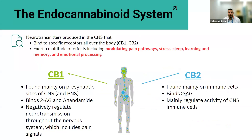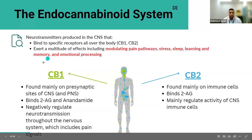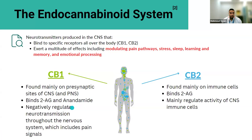The endocannabinoid system is composed of certain neurotransmitters that bind to their respective receptors, exerting a multitude of effects involved in the modulation of pain pathways, stress, sleep, learning and memory, as well as emotional processing. CB1 receptors are mainly found in the central nervous system, and the endocannabinoids that particularly bind to them are 2-AG and anandamide. With regards to pain, they negatively regulate neurotransmission of these pathways. CB2 receptors are generally found all over the body, mainly in immune cells, binding to 2-AG and regulating immune cell activity in the CNS and elsewhere.